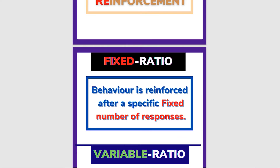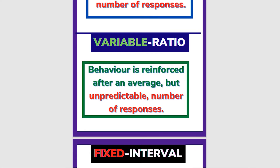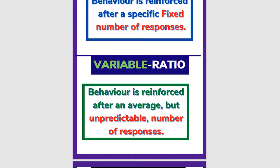With a fixed ratio, you set a specific number of times the dog must perform before giving a reward. You can set that ratio — for example, every 2 or 3 times. Then you set the fixed ratio schedule. The variable ratio schedule is different — reinforcement comes after an average but unpredictable number of responses. It is not a fixed number.